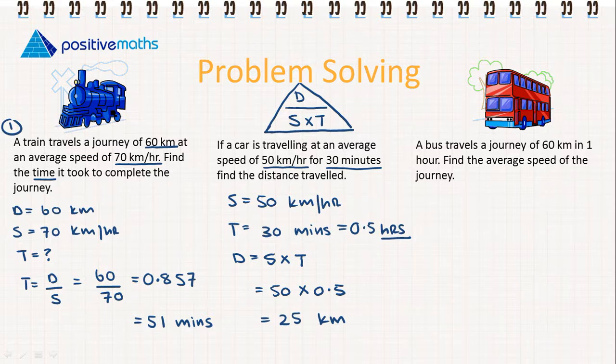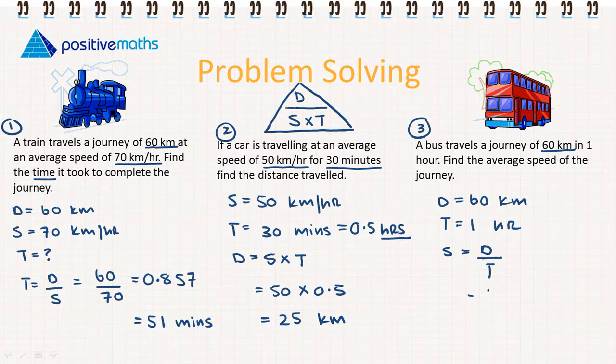And our third example. A bus travels a journey of 60 kilometres in one hour. Find the average speed of the journey. Distance is equal to 60 kilometres, time is equal to 1 hour. We're looking for the speed. So speed is equal to distance over time. That's equal to 60 over 1. So our speed is going to be 60 kilometres per hour.